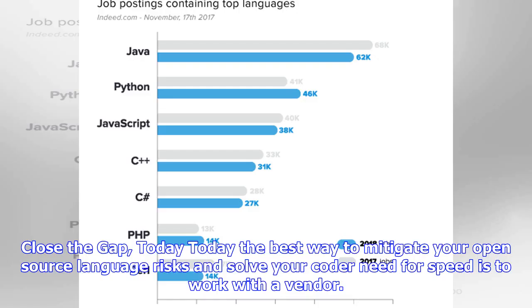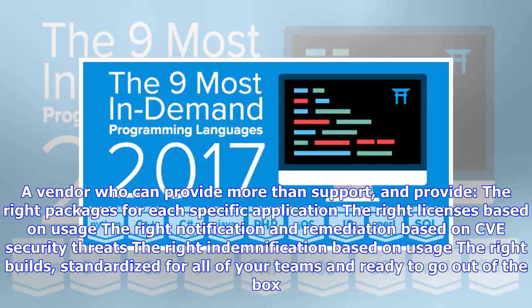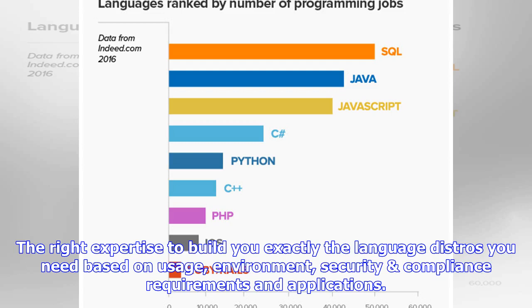Close the gap today. The best way to mitigate your open source language risks and solve your coder need for speed is to work with a vendor — a vendor who can provide more than support, and provide the right packages for each specific application, the right licenses based on usage, the right notification and remediation based on CVE security threats, the right indemnification based on usage, the right builds standardized for all of your teams and ready to go out of the box.